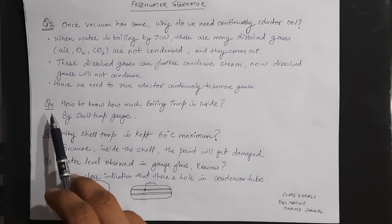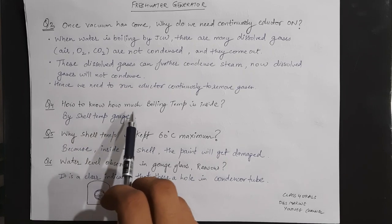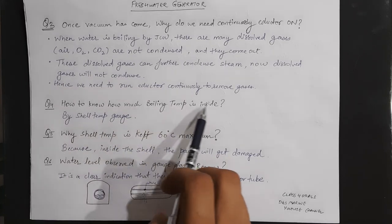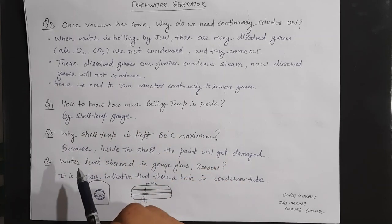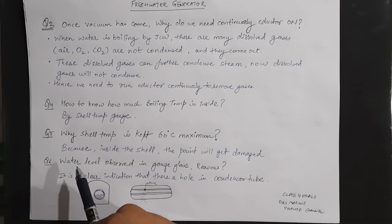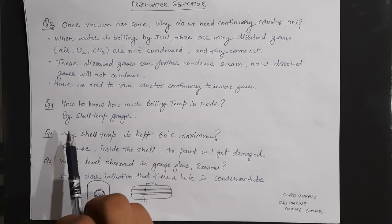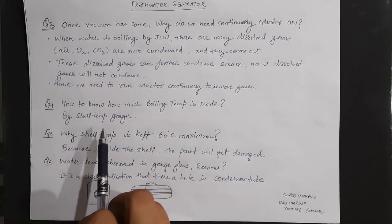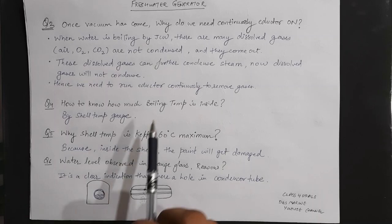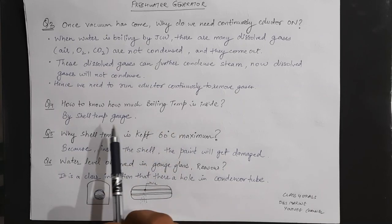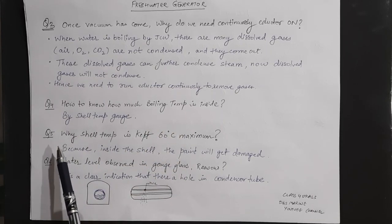The fourth question: how do we know the boiling temperature inside the fresh water generator? Simple — by the shell temperature gauge, we can get the boiling temperature inside the fresh water generator.